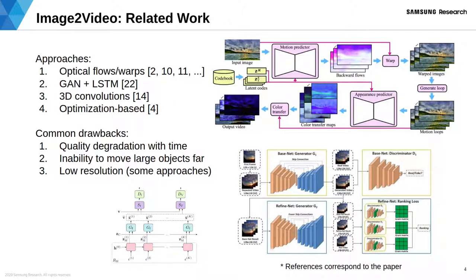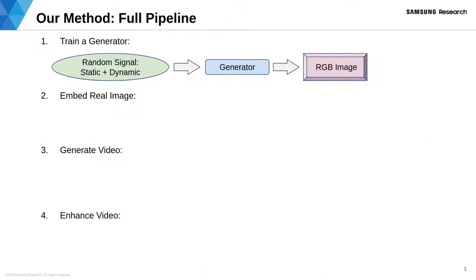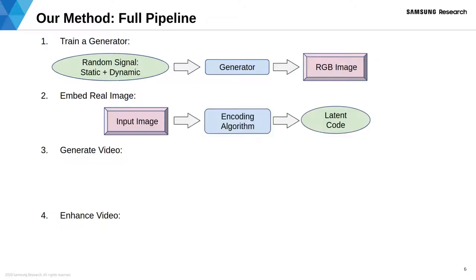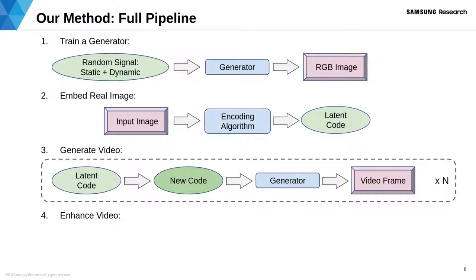Generation-based approaches usually work only in low resolution. In this paper we propose to train a generative model which is capable of producing realistic images without modeling motion explicitly. We train our generator to decouple control of static and dynamic parts of the output image. Then we encode a given real image in terms of the generator inputs. After that, we can modify dynamic inputs in order to obtain a video.